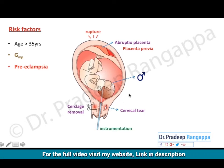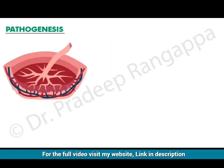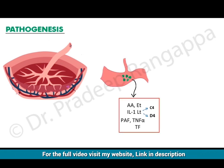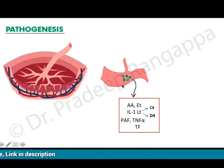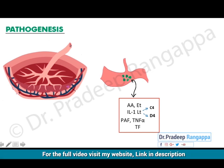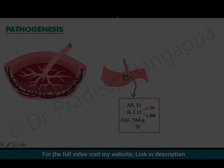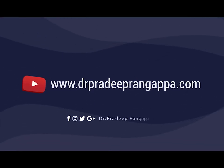These are some of the obstetric risk factors associated with amniotic fluid embolism. The main pathogenesis is the exposure of maternal circulation to amniotic fluid and fetal antigens. This remains the primordial reason why the whole activation of the inflammatory cascade sets in — when amniotic fluid gets exposed to the maternal circulation, that is when the whole inflammatory process begins.